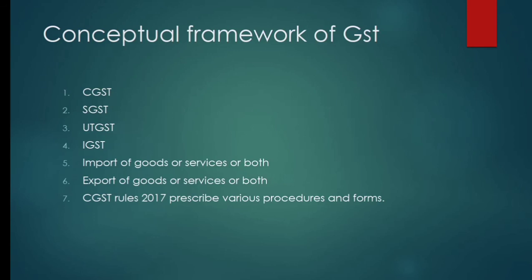We will study these one by one. CGST — GST levied by the center on intrastate supply of goods and services or both is called CGST. The tax levied by the center on intrastate supply is CGST. SGST — GST levied by the state on intrastate supply of goods and services or both is called SGST. For Union Territories, the tax levied, collected, and administered is called UTGST.